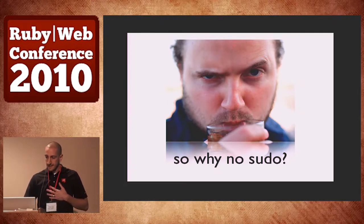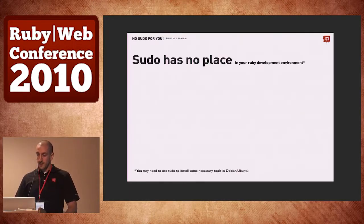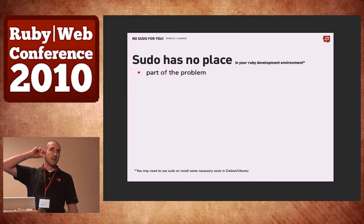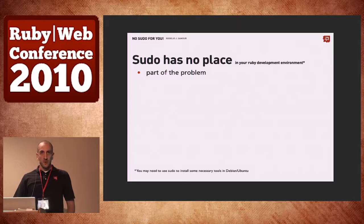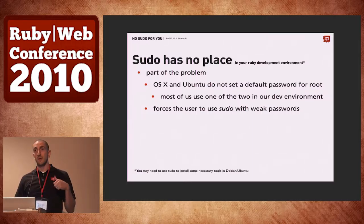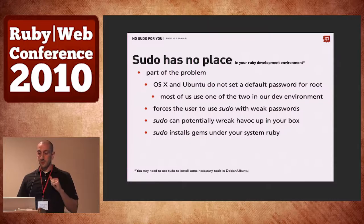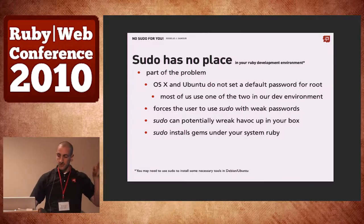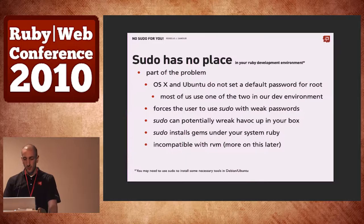Sudo has no place in the Ruby development environment. Part of the problem is most of us are using Ubuntu or some sort of Linux, or OS X. Ubuntu and OS X specifically don't really set a default password for root. That forces us to use weak passwords. And sudo can potentially wreak havoc on your box. If you run sudo gem install, it'll install Ruby into your system Ruby, which makes it incompatible with RVM. And it's also not ideal for Homebrew in OS X.